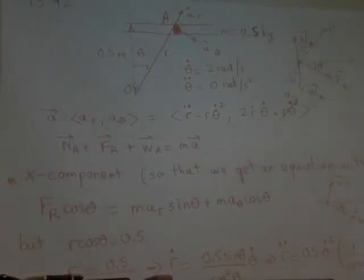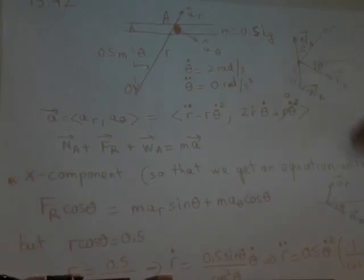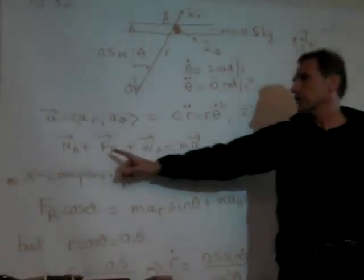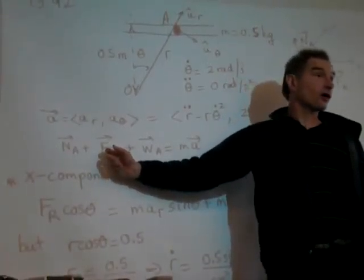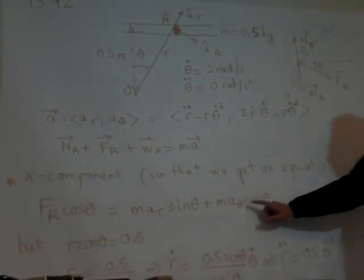It's because what are the forces we don't know in there? It is N and the force by the rod. So if you take the X direction, you get the component of the force by the rod, but no component from the normal. So your equation then is going to give you something that gives you F rod directly. So that's what we have here.